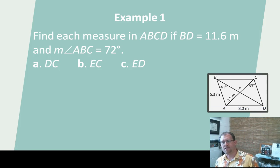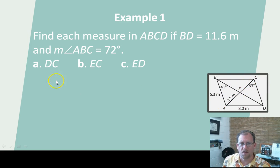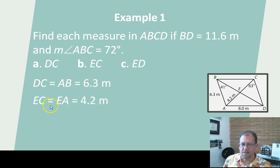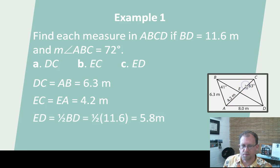Find each measure in ABCD. If BD is equal to 11.6 meters, and measure of ABC is 72 degrees. So we have this figure here, and we want to find the measure of DC, EC, and ED. And so using this figure, DC, this guy here, has to be congruent to AB. And if we know that this is 6.3, then this is also 6.3. EC is congruent to EA. And if this is 4.2, then this also has to be 4.2. And ED is half of BD. And so if we know that BD is 11.6, this whole thing is 11.6, then half of that is going to be 5.8.